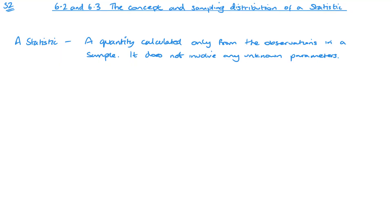In short, we take many samples of a population, calculate the same type of statistic each time, and that will have its own distribution which is called the sampling distribution.